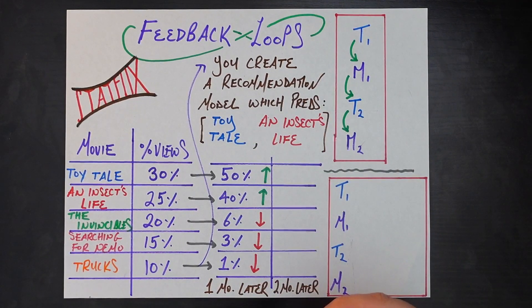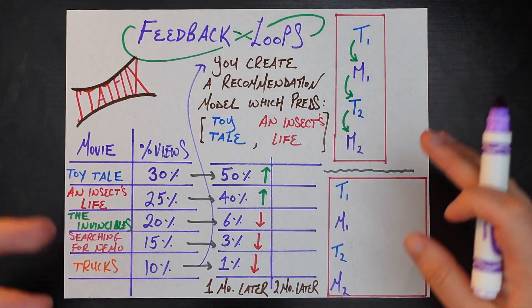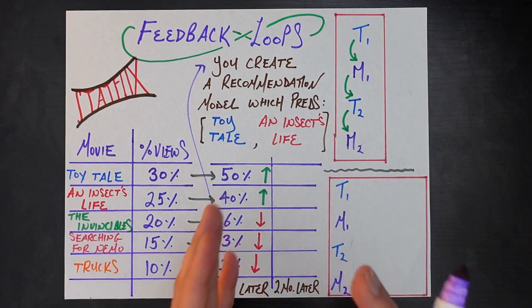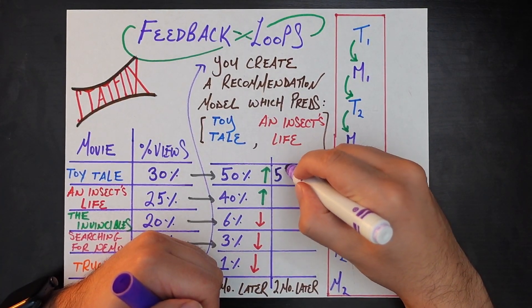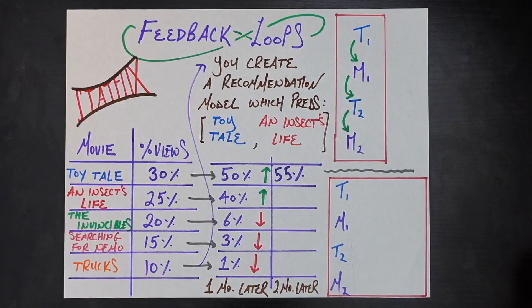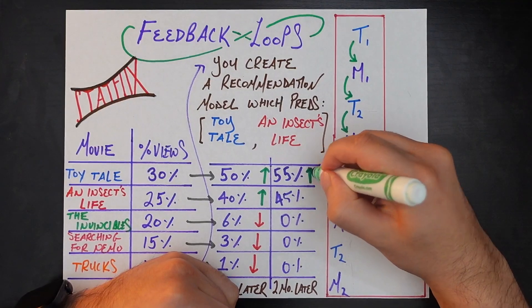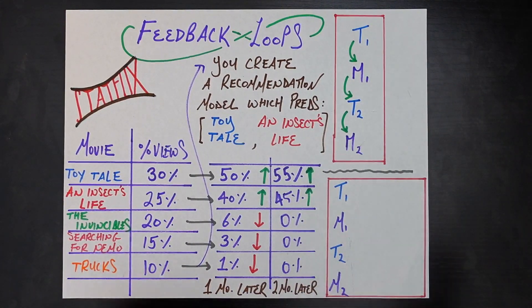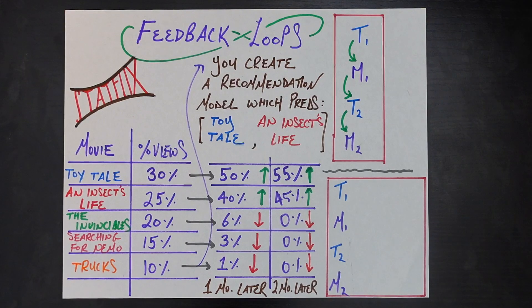Two months later — after your second model has been in the wild for a while — what has happened to these percentages? We find that Toy Tale now has 55% of all views, and Insects Life has 45%. If you add those up, that's already 100%, which means by definition you have zeroed out all of the other inventory on your website. These two have gone up, and the other ones have gone down to their absolute minimum.